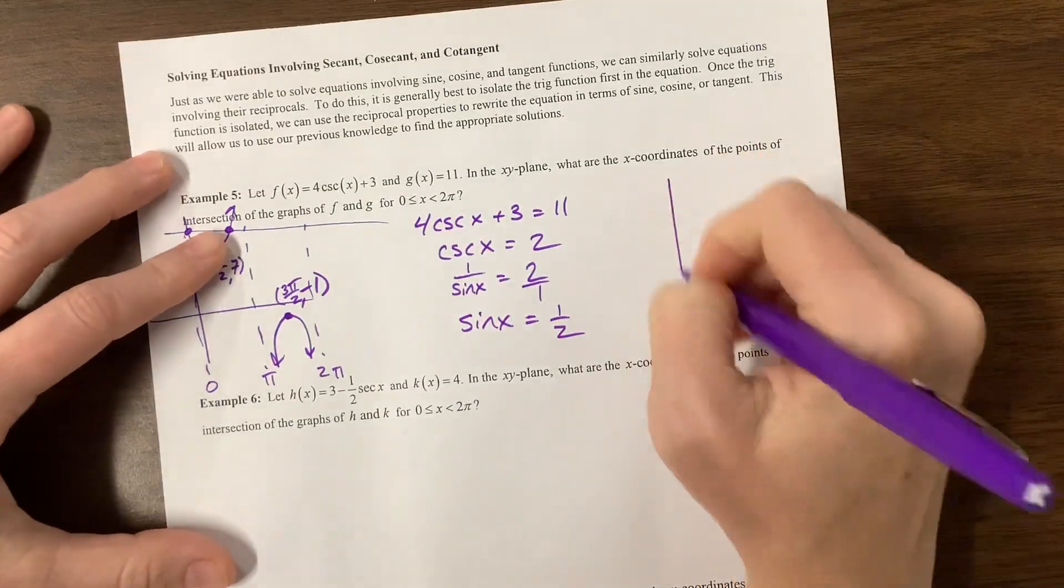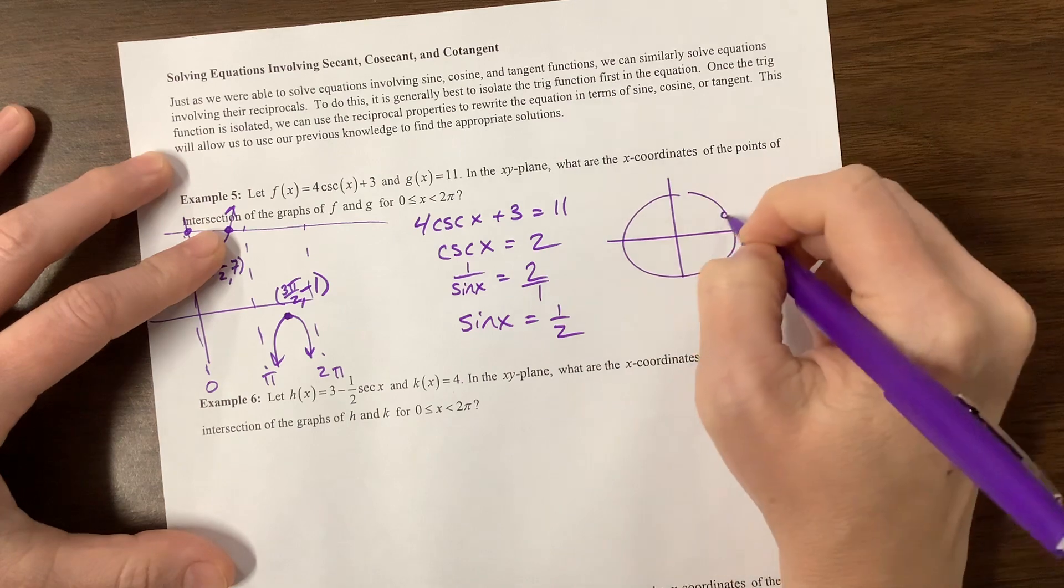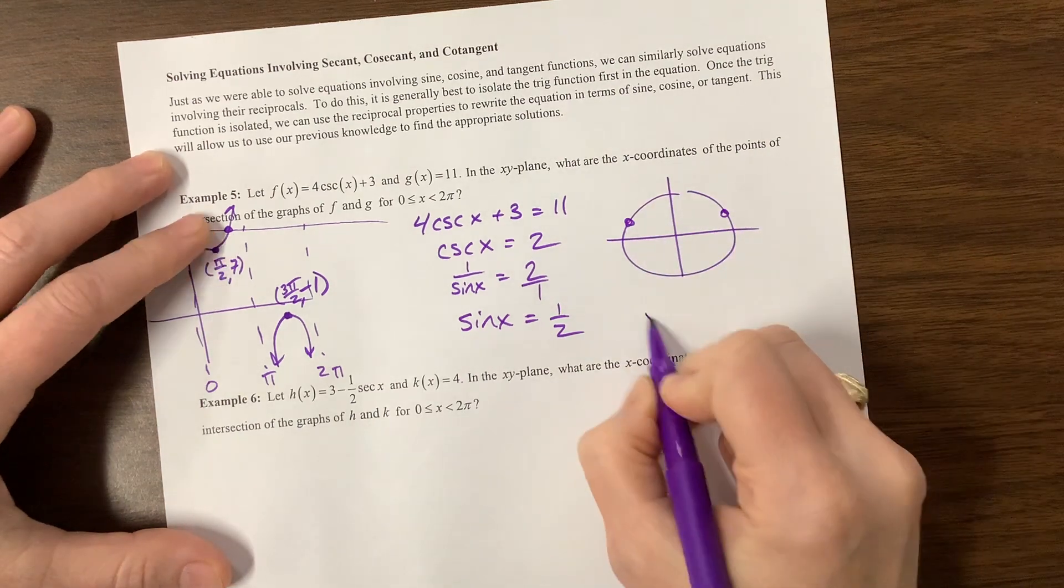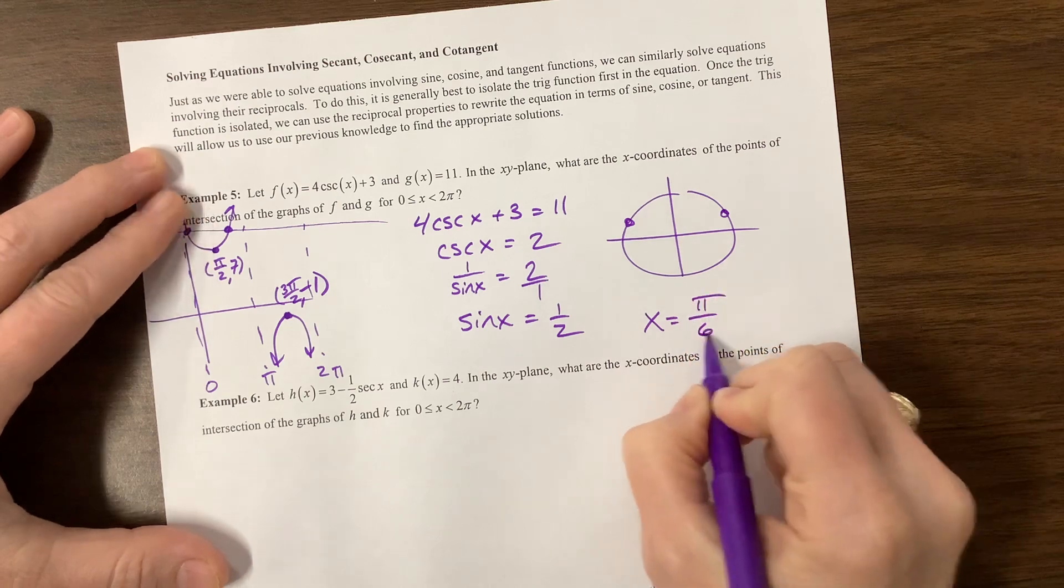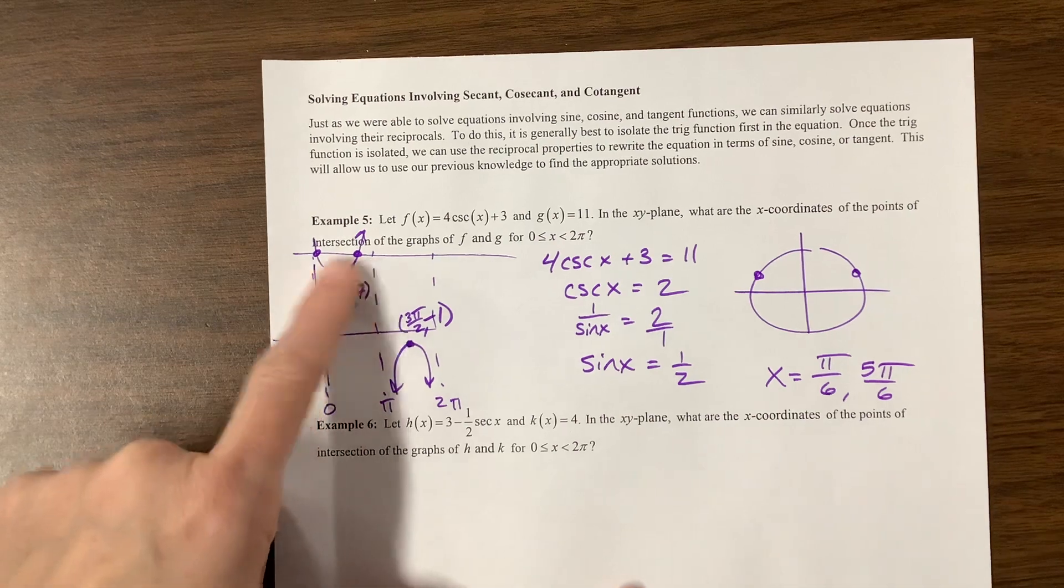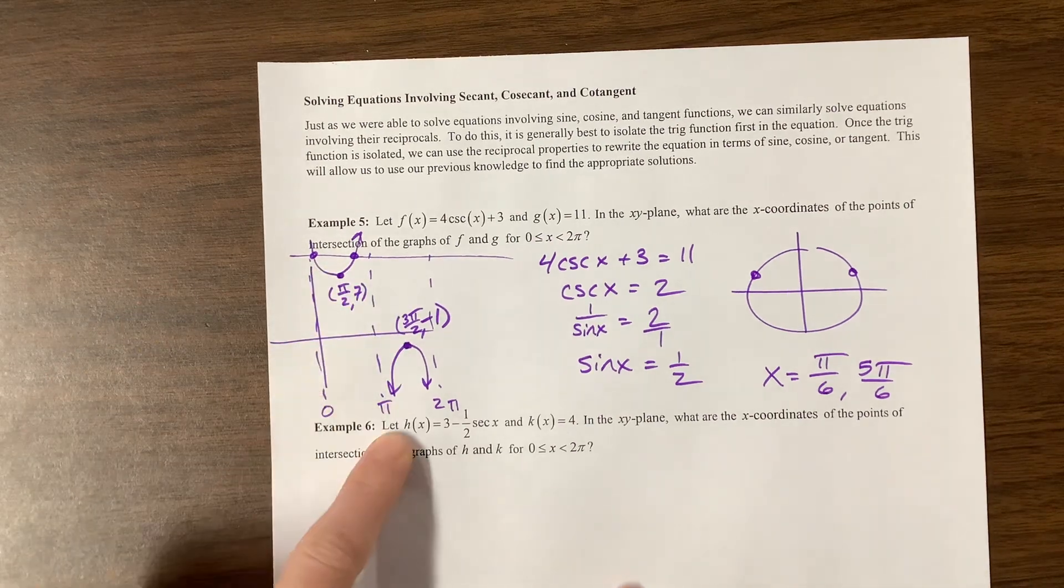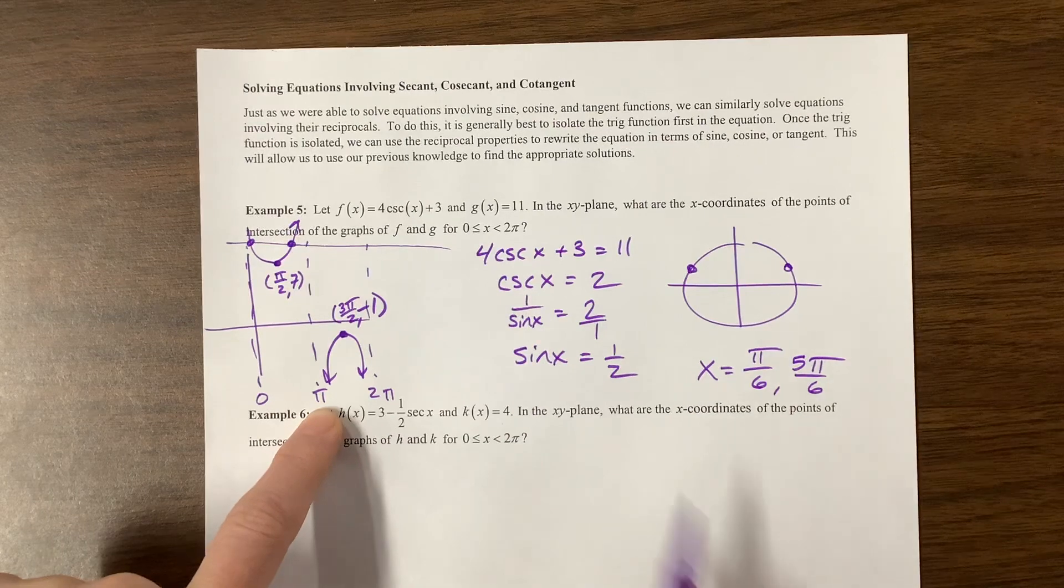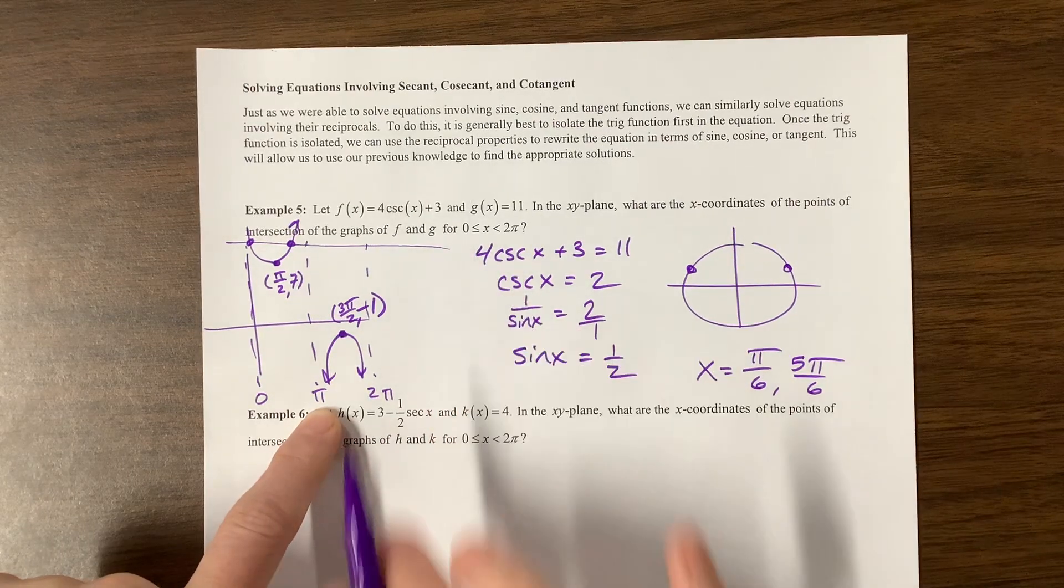If I take the reciprocal of both, or you can think of I'm cross-multiplying and then dividing, but basically we get that sine of x is equal to 1 half. And now I think back to my unit circle. Where does sine equal 1 half? Well, here and here. So this is π over 6, and this is 5π over 6. Does that make sense with my picture? I think it does. It looks like it's somewhere close to 0, somewhere close to π, which is what we got right here. And they told us to live between 0 and 2π, so we did.